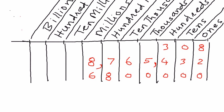So the way we read this number is six million eight hundred thousand. There are no more numbers greater than zero, so we read it out as six million eight hundred thousand.